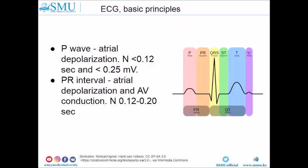ECG normally consists of several waves and segments. First, the P-wave, which represents atrial depolarization. Normally it should be less than 0.12 seconds and less than 2.5 mm in height. The PR interval represents atrial depolarization and AV node conduction, and normally it should be between 0.12 and 0.20 seconds.